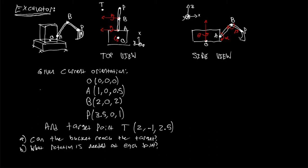We can visualize how this would move: the top bucket piece rotates, and we have a rotation at A going up or down, and a rotation at B moving the bucket up or down. From this current orientation, we have a target point T. We want to move the bucket to this target point. First, we ask whether it's possible for the bucket to reach the target — is the arm long enough? And second, if it is, what rotation is needed at each joint? These rotations are defined as theta about the Z-axis at the origin, alpha about the A axis, and beta about the B axis.